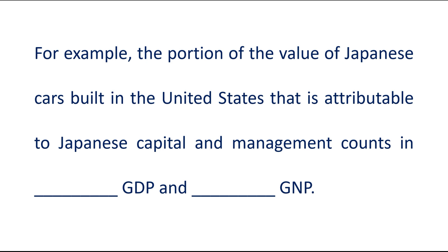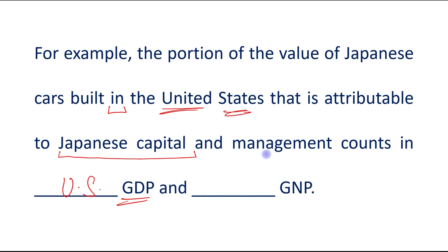For example, the portion of the value of Japanese cars built in the United States — because production happened in the United States, it will be a part of US GDP. But that portion of value attributable to Japanese capital — because Japanese factors of production were used — will be counted in Japan's GNP. So it is clear: where production occurs determines GDP, and whose factors of production are used determines GNP.